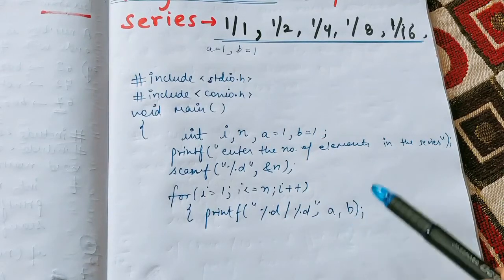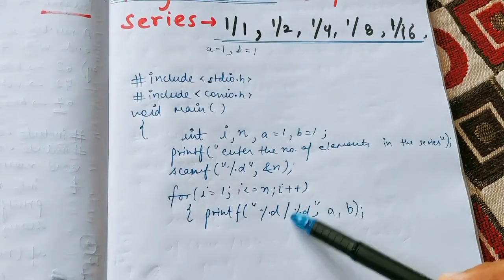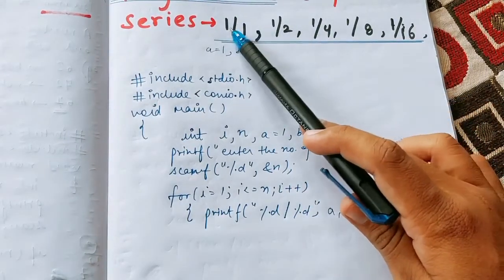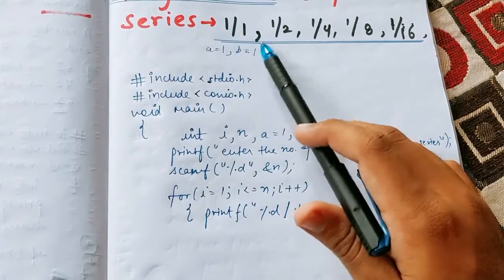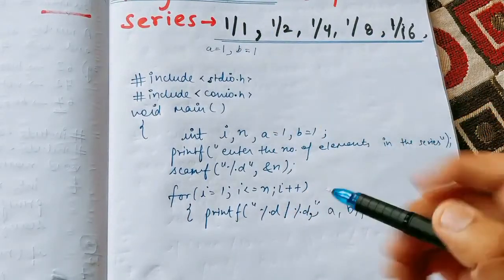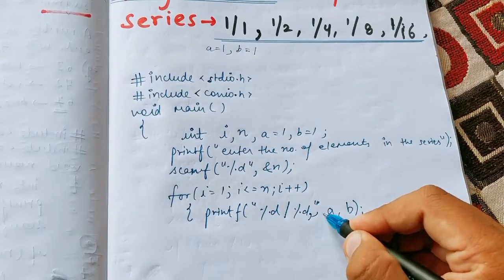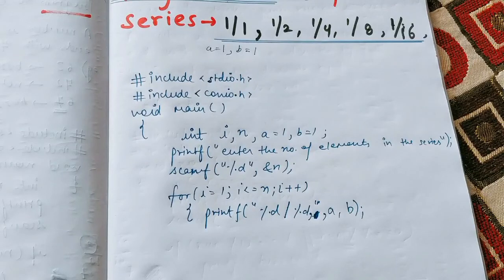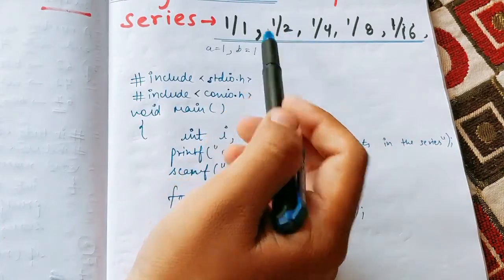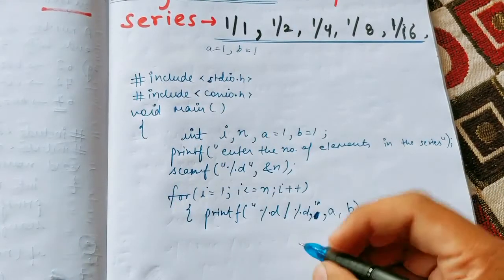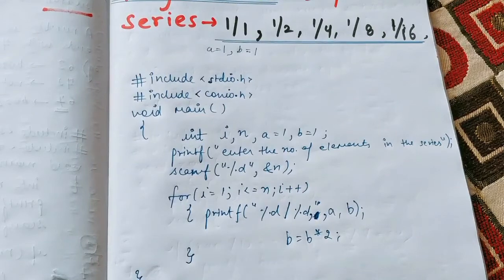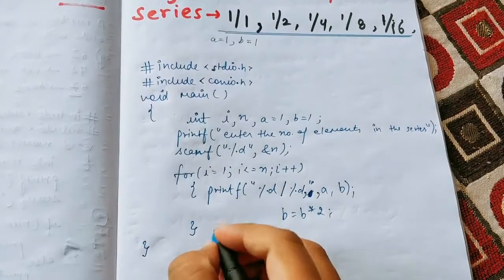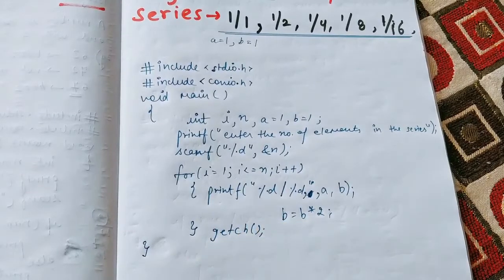In the first iteration, a is one and b is one, so what gets printed is '1/1'. We also add a comma so the series prints as '1/1, 1/2, 1/4' and so on. We add a backslash n as well so output goes to the next line. After printing, we double b by saying b equal to b into 2. Then we close the loop and the main function, and add getch to hold the screen.